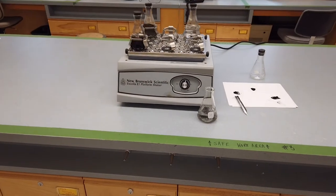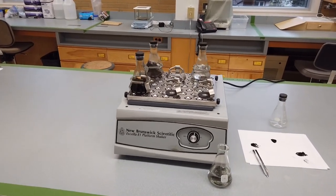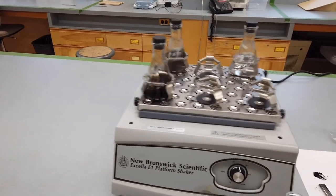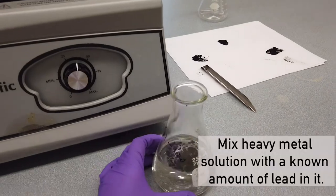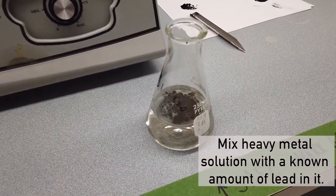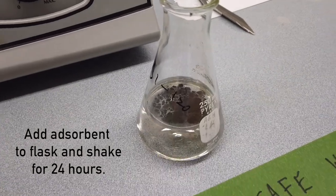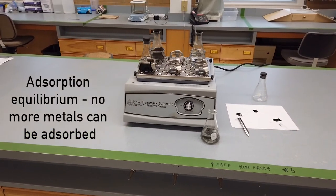To test how well these materials absorb the heavy metals, I need to use a shaker. This is used to mix or agitate substances in a tube or flask by shaking. First, we mix the heavy metal solution which has a known amount of lead in it, then put adsorbents in it and shake for 24 hours until they reach adsorption equilibrium.